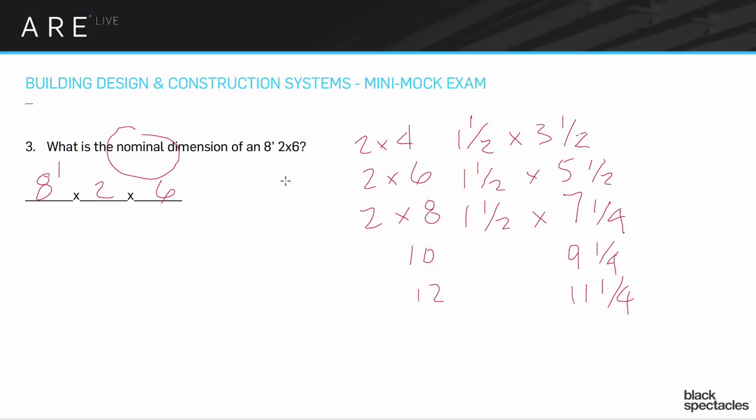Similar thing, this is all with dimensional lumber. So this is 4x4s, 4x6s, 2x4s, 2x12s, all of that kind of stuff. That's dimensional lumber and it's dressed lumber. So in our situation, if this question had actually asked what is the actual dimension of an 8-foot 2x6, it would be 1.5 by 5.5.